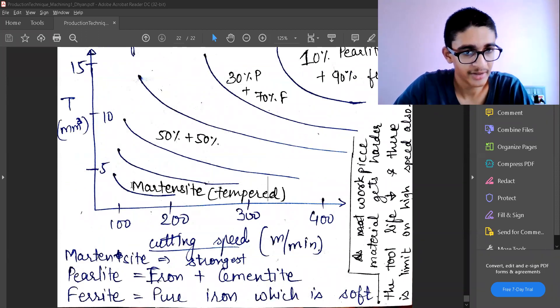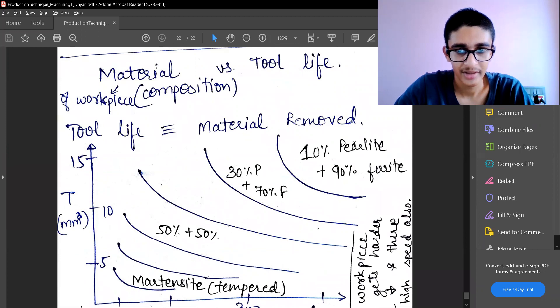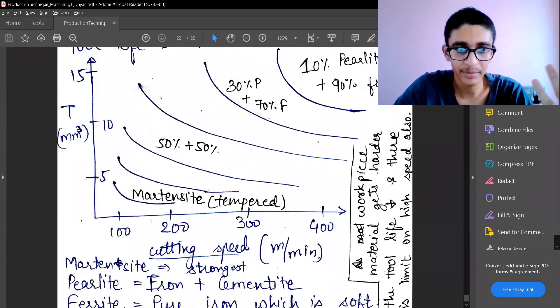And when I'm going to have the softest material of the workpiece, my tool life is going to increase. So these are the materials of workpiece, they are not the materials of tool, they are the materials of workpiece. That means of what material I'm going to do machining off.